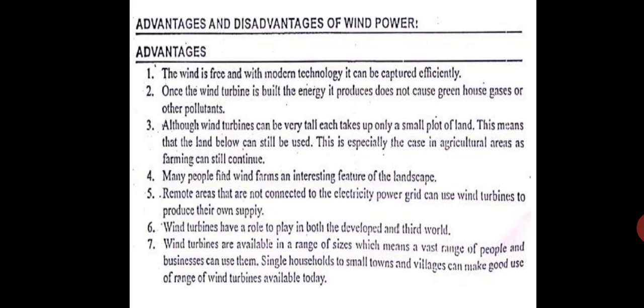Although wind turbines can be very tall, each one takes a very small plot of land — maybe around 20 by 20 feet only. This means the land below can still be used, especially in agricultural areas where farming can still continue. The nearby land can be used for agriculture, whereas a coal power plant requires a huge amount of land for incoming coal, fly ash, and dust.